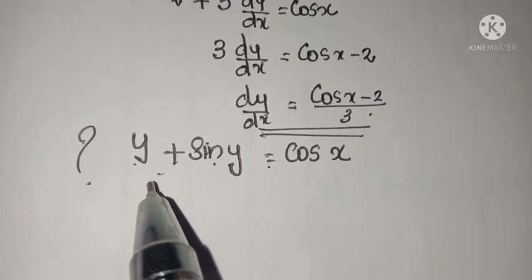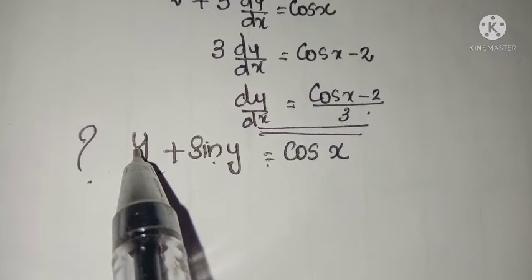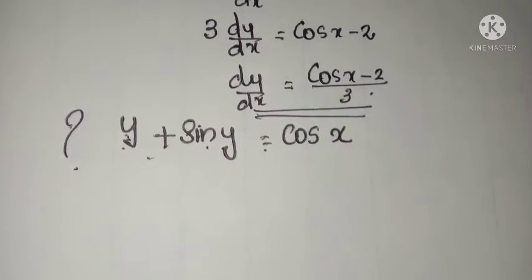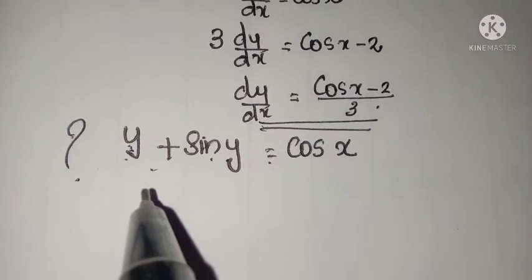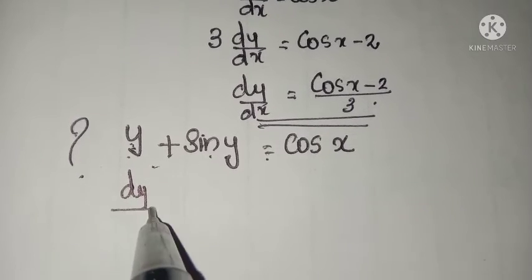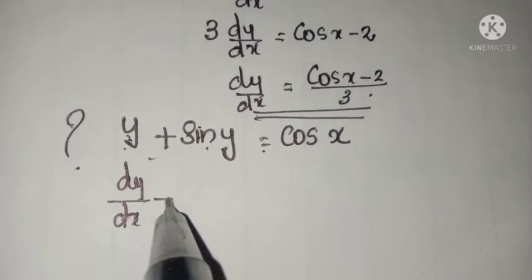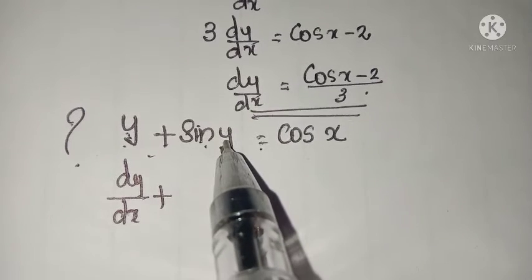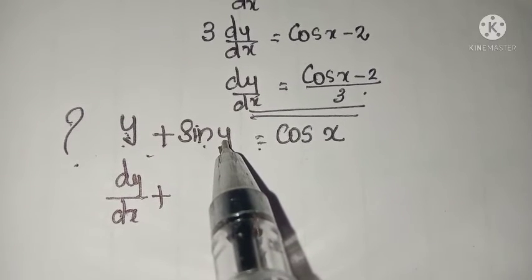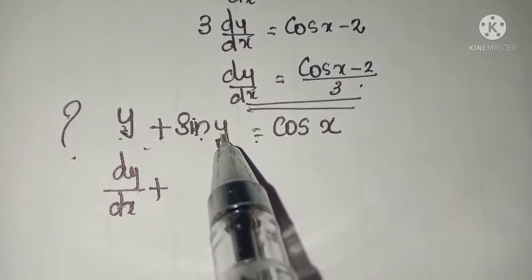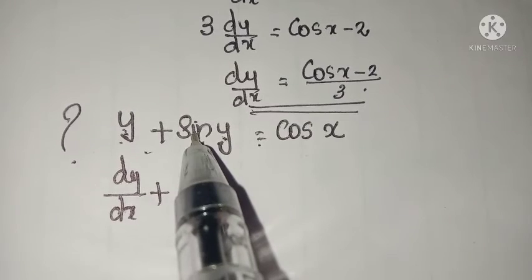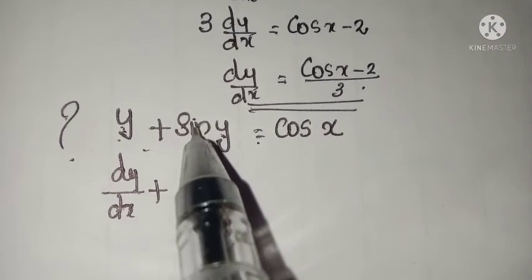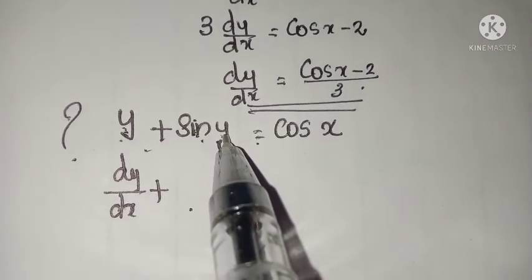Differentiate with respect to x. The derivative of y with respect to x is dy by dx. Now for sin y — if it were sin x, we could directly write the derivative as cos x. But it is sin y.